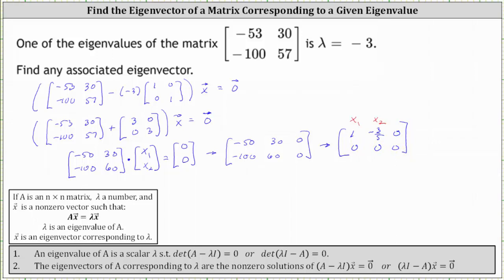Notice there's no pivot in column two, which indicates x2 is a free variable. The first row indicates that x1 minus three-fifths x2 is equal to zero. And again, because x2 is a free variable, we have x2 equals x2.